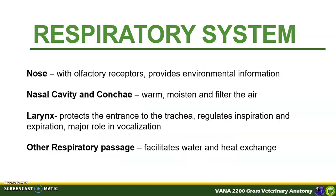Here are some of the basic roles of the parts of the respiratory system. The nose has olfactory receptors that provide environmental information to the brain. The nasal cavity and conchae warm, moisten, and filter the air. The larynx, on the other hand, protects the entrance to the trachea, regulates inspiration and expiration, and has a major role in vocalization.